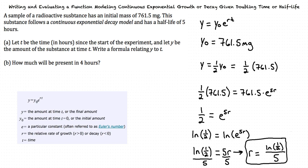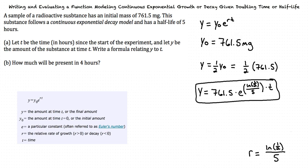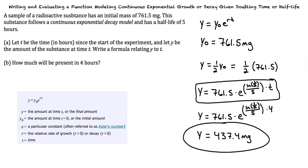Using the r value we just found, we substitute that r value and the other values we found into the equation to solve for part a. For part b, it asks us to find how much is left after 4 hours. So we give t a value of 4 and solve for y. This results in our final answer of y equals 437.4 grams after 4 hours.